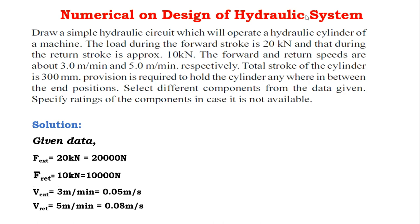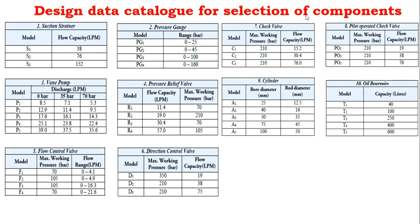This is the design data catalog for selection of components. From these tables we have to select the components for the circuit we are going to design. Components available include suction strainer, pressure gauge, hydraulic pump, pressure relief valve, flow control valve, and direction control valve. The specification for selection of each component is based on pressure and flow rate.